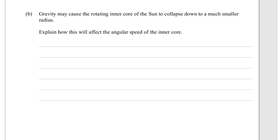B, gravity may cause the rotating inner core of the Sun to collapse down to a much smaller radius. Explain how this will affect the angular speed of the inner core omega, which is the number of radians per second. So as a concept of angular momentum, because always angular momentum will be conserved whenever anything is rotating and it changes in some way, angular momentum must be conserved.